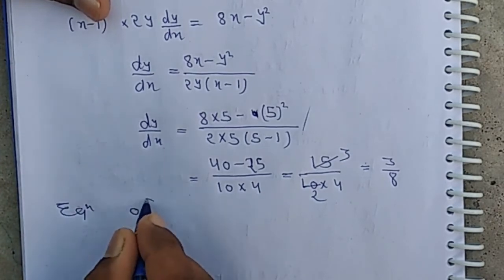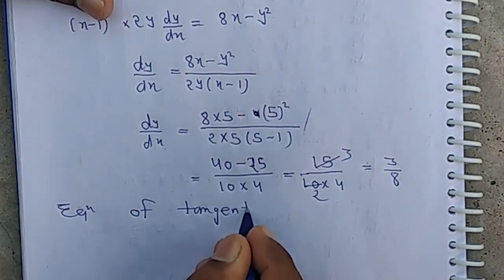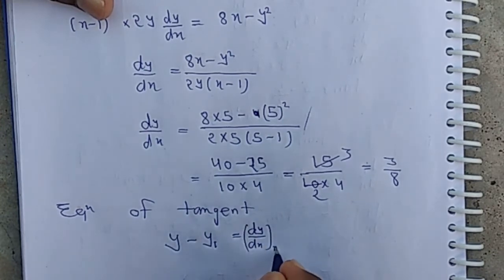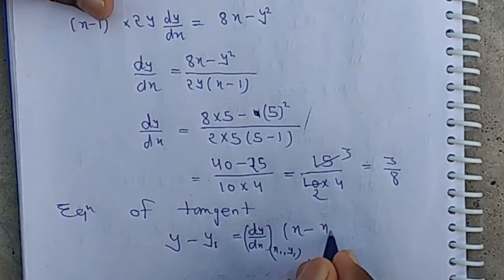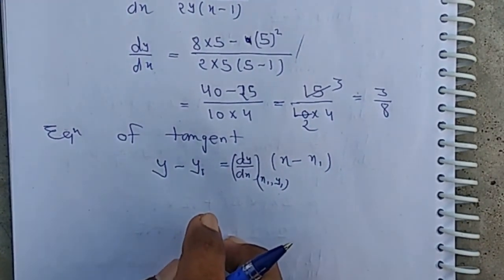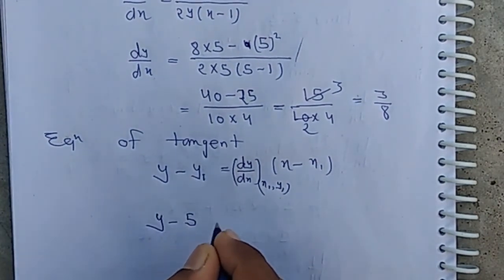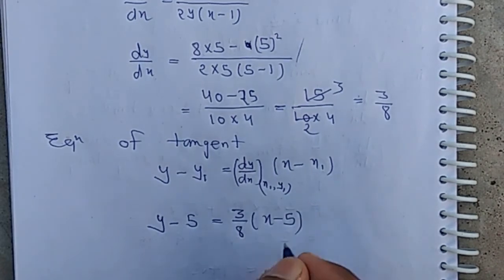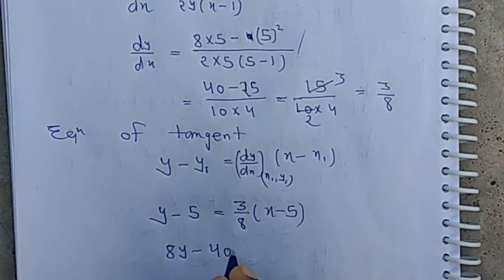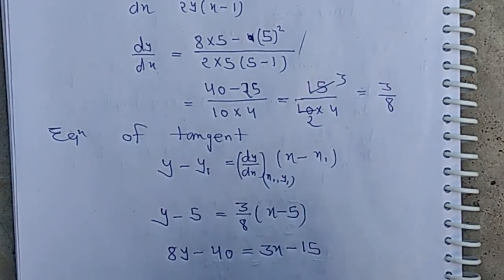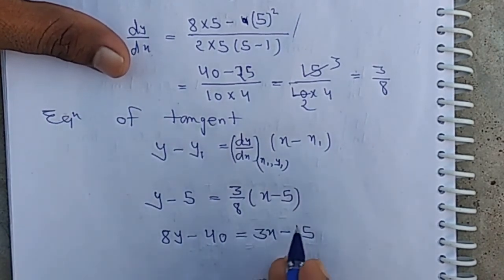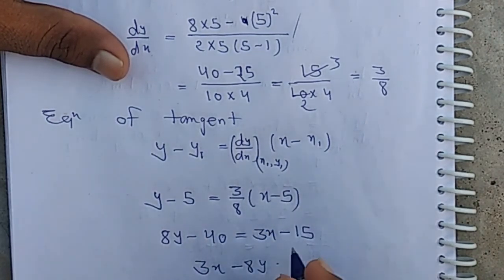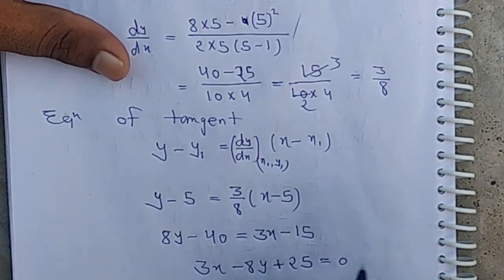The equation of the tangent is given by y − y1 = (dy/dx)·(x − x1). With (x1, y1) = (5, 5) and dy/dx = 3/8: y − 5 = (3/8)(x − 5). Cross-multiplying: 8y − 40 = 3x − 15, which gives 3x − 8y + 25 = 0. This is the answer.